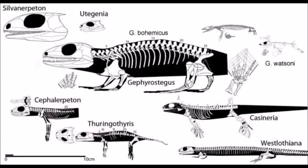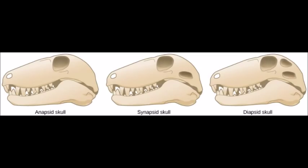Amniotes first appeared during the Carboniferous period and they quickly divided into many groups. To summarize, the main daughter clades of amniotes are anapsids, synapsids, and diapsids. These are defined by the number of temporal fenestrae — the holes where jaw muscles attach — in their skulls.